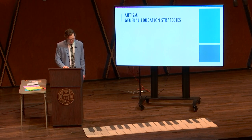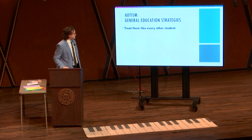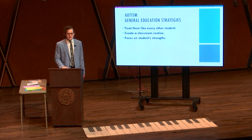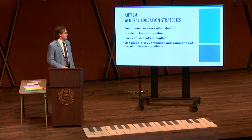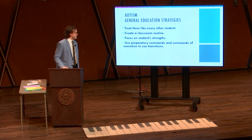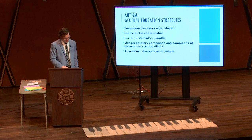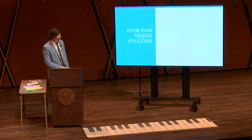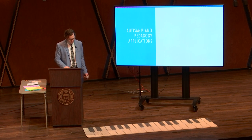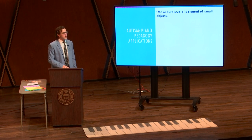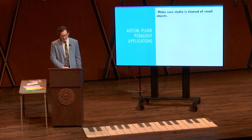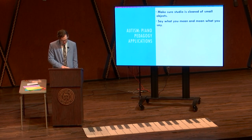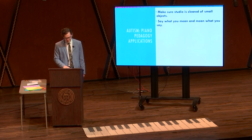Some general education strategies would be to treat them like every other student, create a classroom routine, focus on students' strengths, use preparatory commands and commands of execution to cue transitions, give fewer choices and keep it simple, and watch for sensory issues of visual and auditory. Some applicable strategies in your teaching: make sure your studio is clear of small objects, as the student may be interested in playing with or touching them. Say what you mean and mean what you say — do not be sarcastic with an autistic student, as they will not often accept sarcasm well.